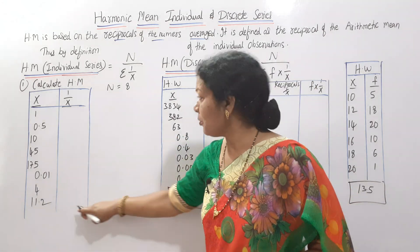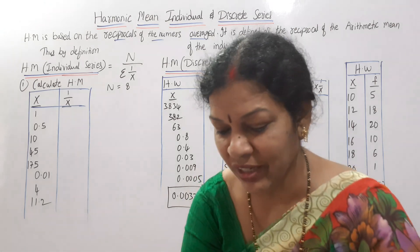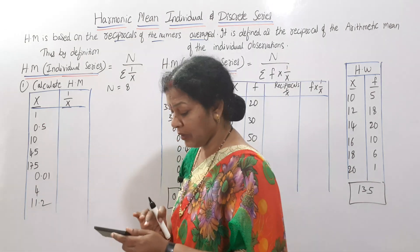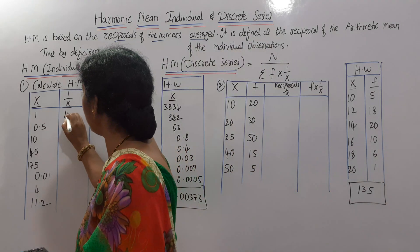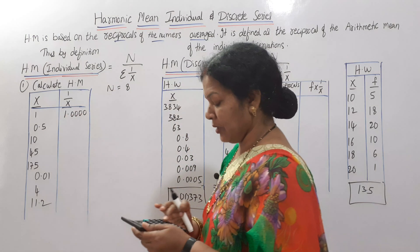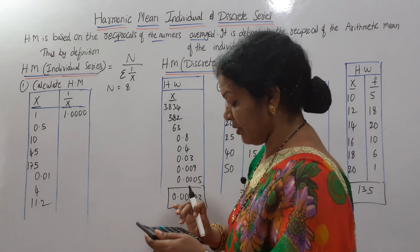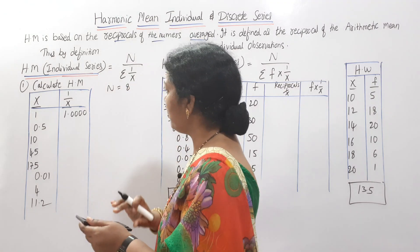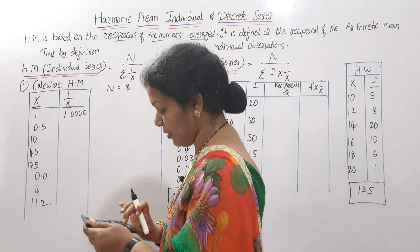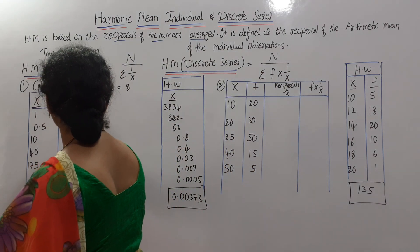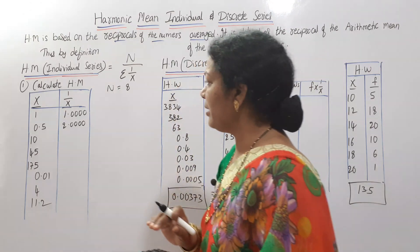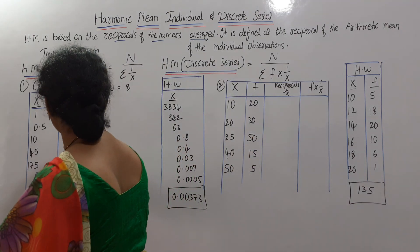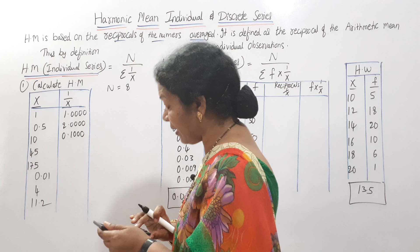Now what do we need? 1/x. First we will calculate 1/x for each value; if you total them up you will get Σ(1/x). Calculations: 1/x — 1 divided by 1 is 1. 1 divided by 0.5 comes to 2. 1 divided by 10 is 0.1. Next, 1 divided by 45 gives 0.0222.